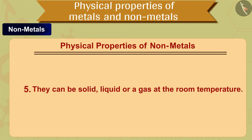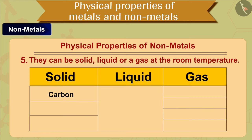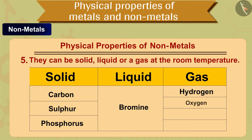The fifth property of non-metals is that they can be solid, liquid, or gas at room temperature. For example, carbon, sulfur, and phosphorus are solids; bromine is liquid; and hydrogen, oxygen, nitrogen, and chlorine are gaseous at room temperature.